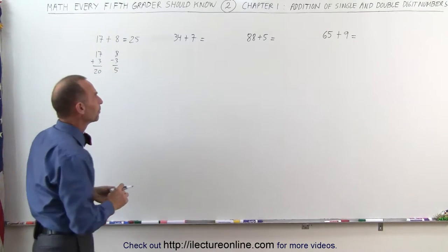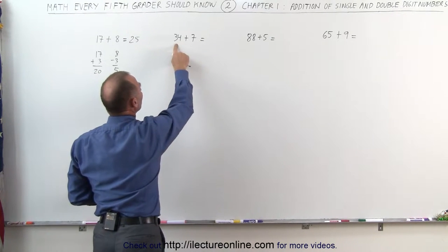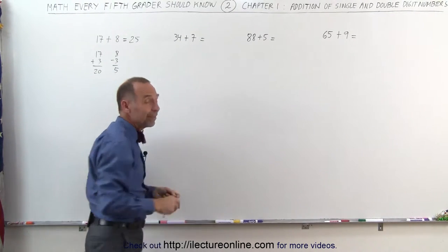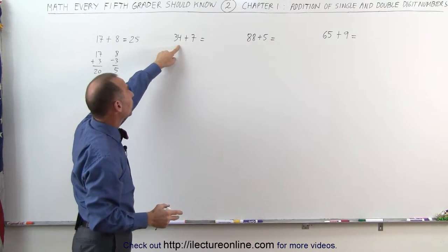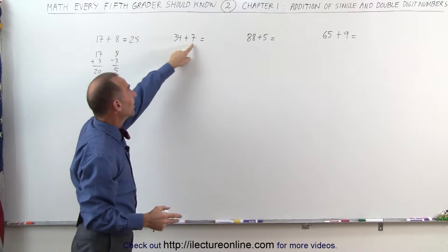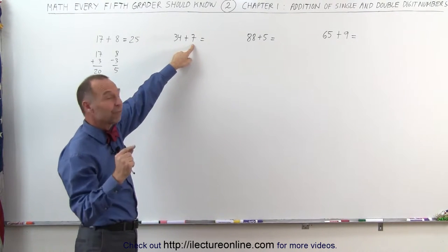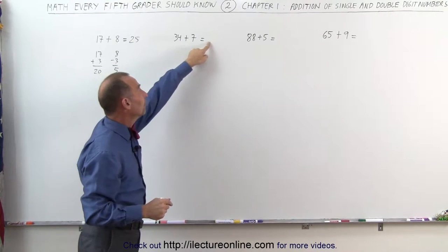Let's try the next number: 34 plus 7. How much more do I need to add to 34 to get 40? Well, 6 more will give me 40. So 34 plus 6 is 40. If I take 6 away from 7, I'm left with 1. 40 plus 1 is 41.